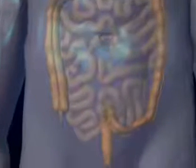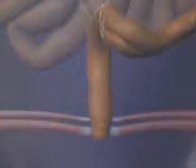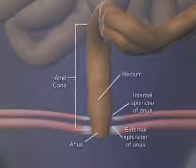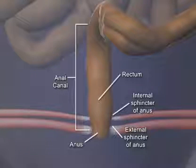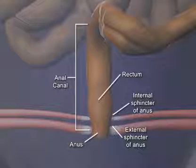The remaining structures distal to the sigmoid colon are the rectum, anal canal, and anus. The anus has two sphincters: an internal one that is involuntary and an external one that is voluntary. The sphincters normally remain closed except during defecation.